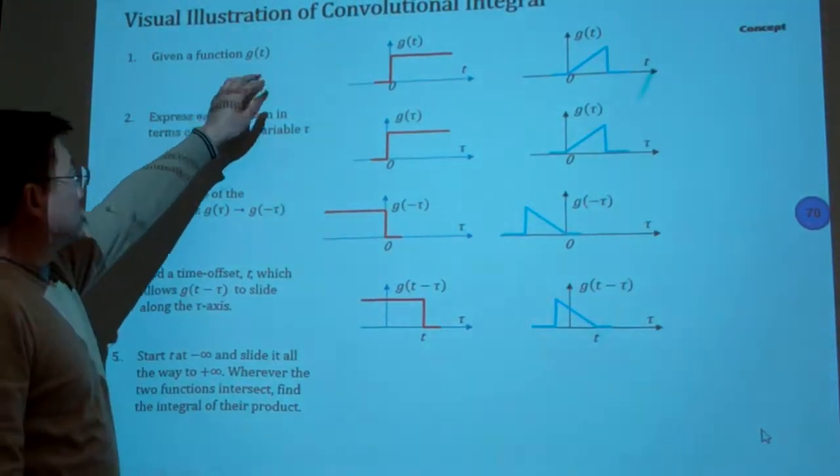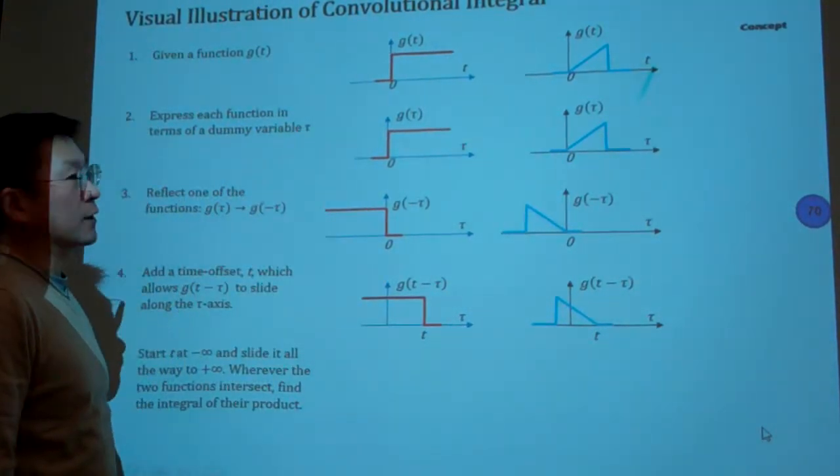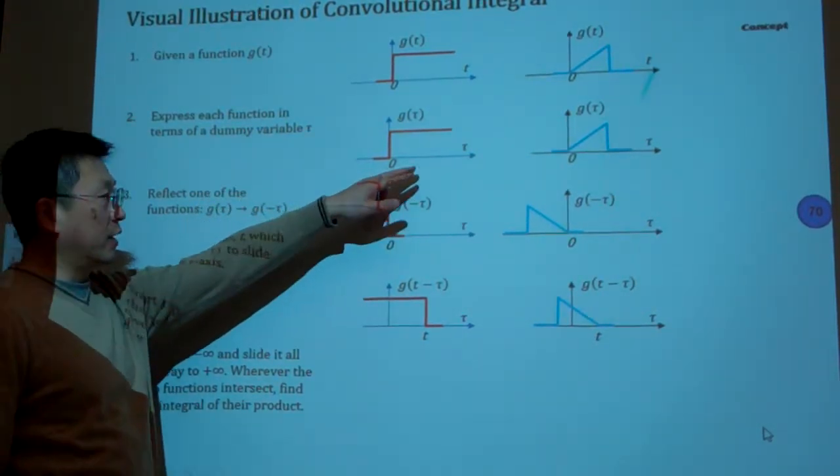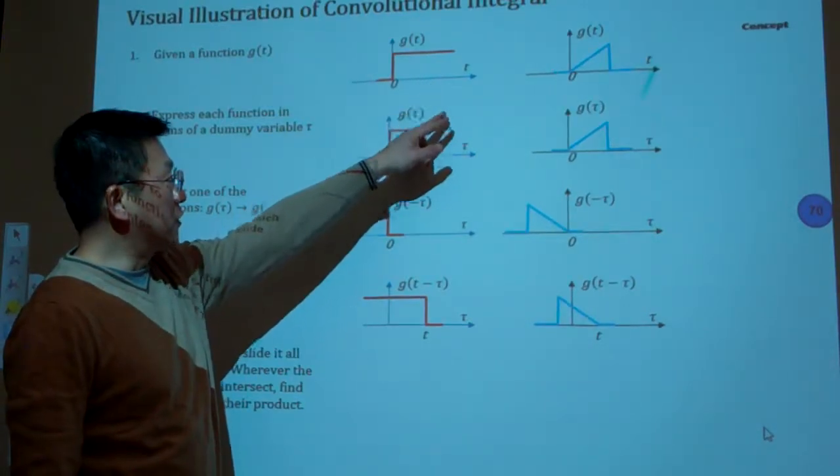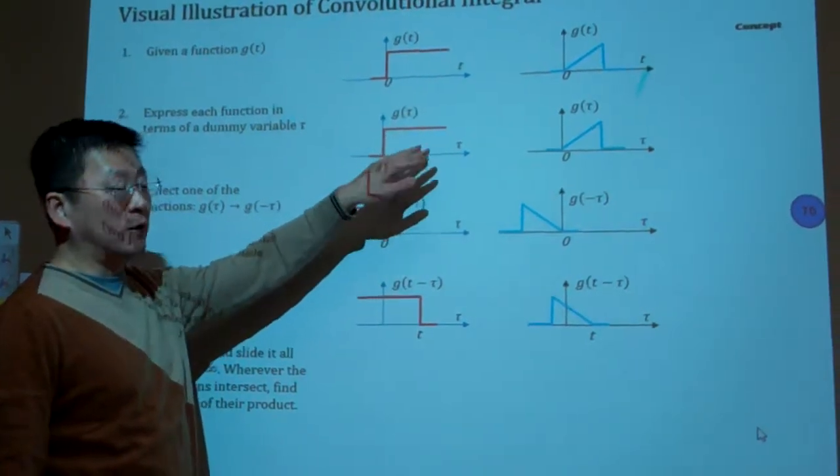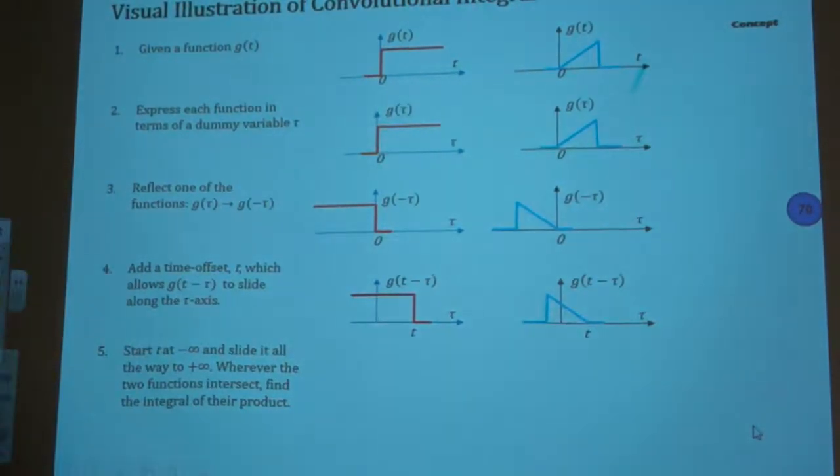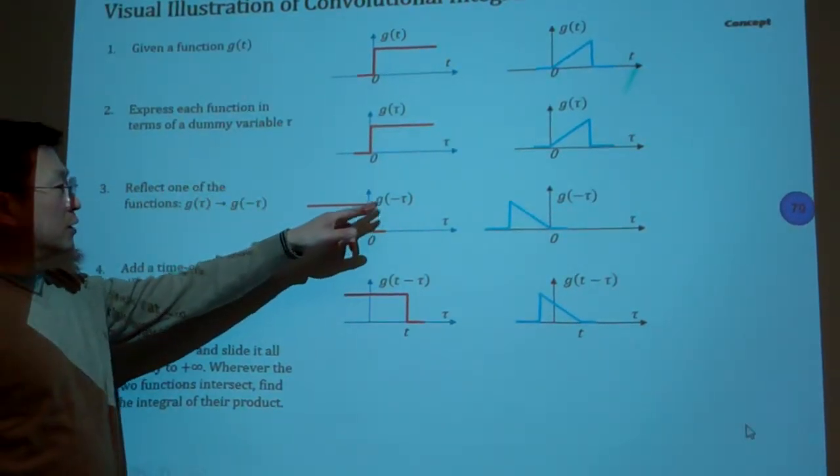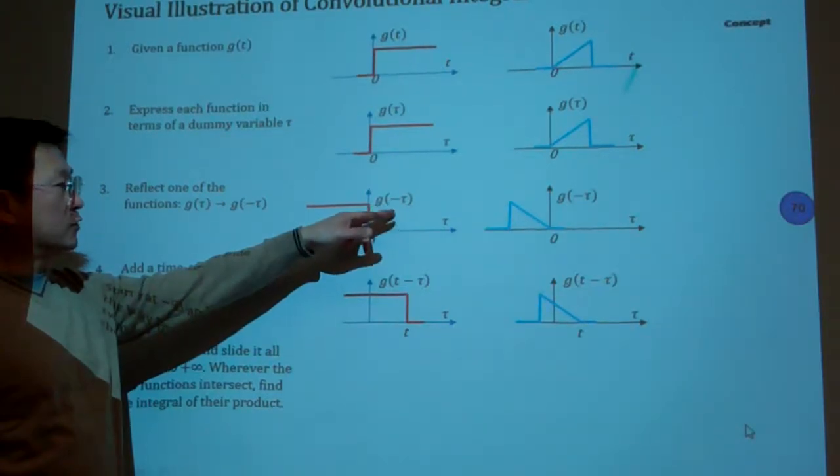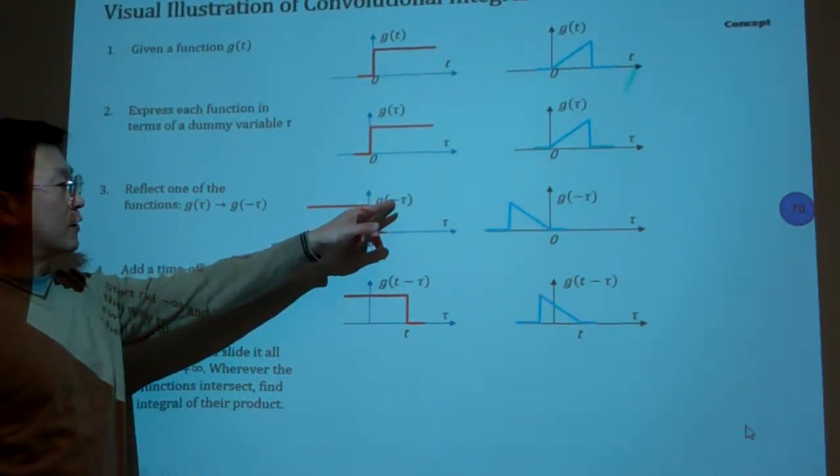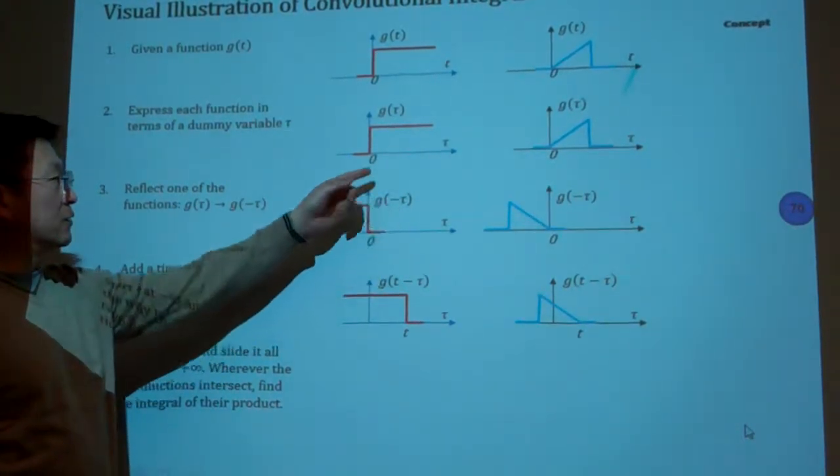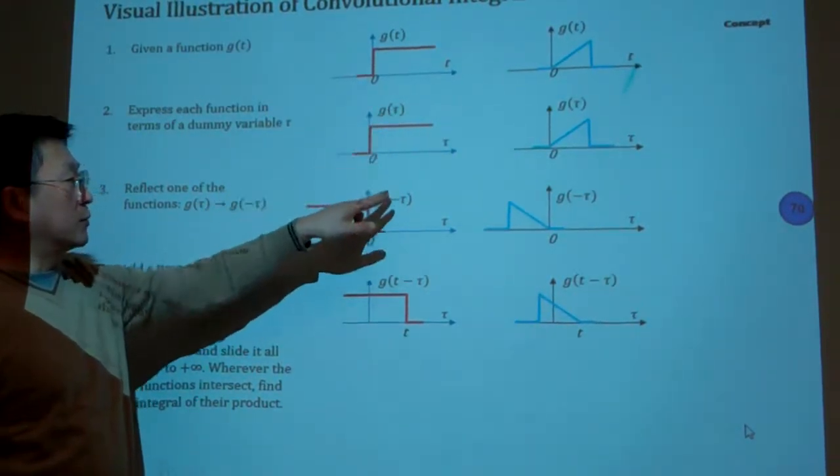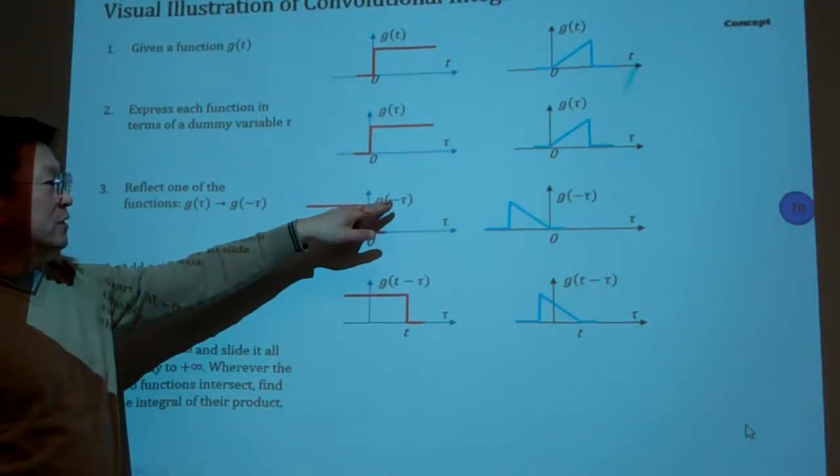So then the second step is we simply replace the independent variable from T to tau. So basically replace tau. The shape keeps the same. The next step, we determine the function which has a minus tau there. Basically from here to here, you notice the replacement basically is the opposite side from here.